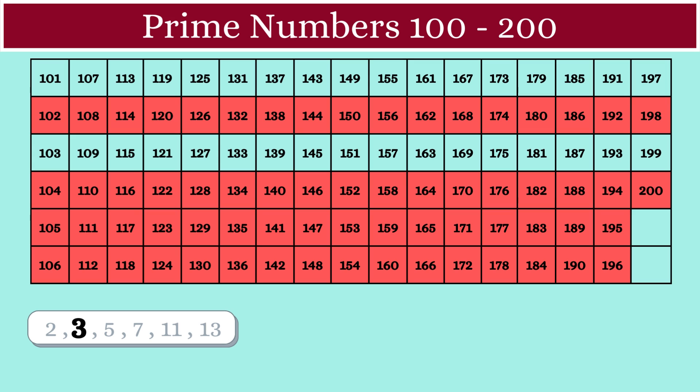Next, we can see that the multiples of 5 are arranged like this, so we will mark them as composite numbers.